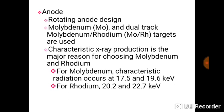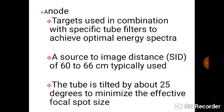The anode is rotating and uses molybdenum, with a dual track which could be molybdenum and rhodium targets. Characteristic radiation is the major reason for choosing these metals. The targets are used in combination with specific tube filters to achieve optimal energy.